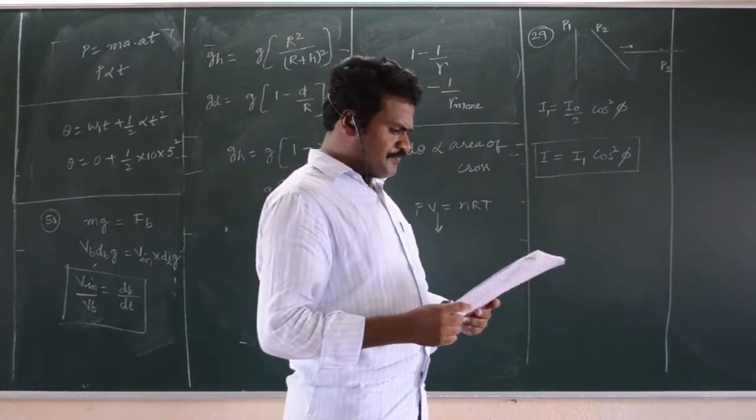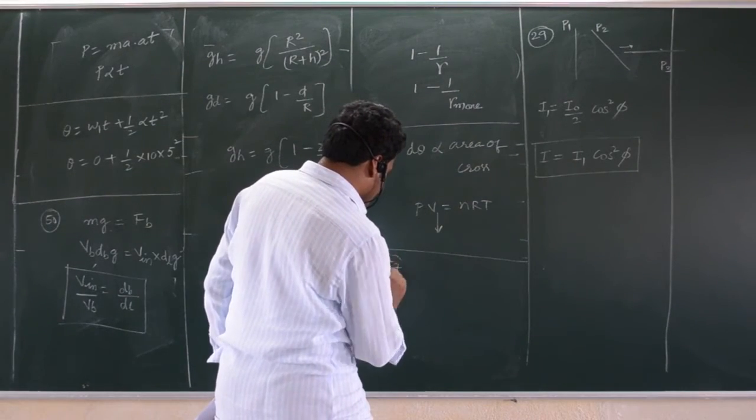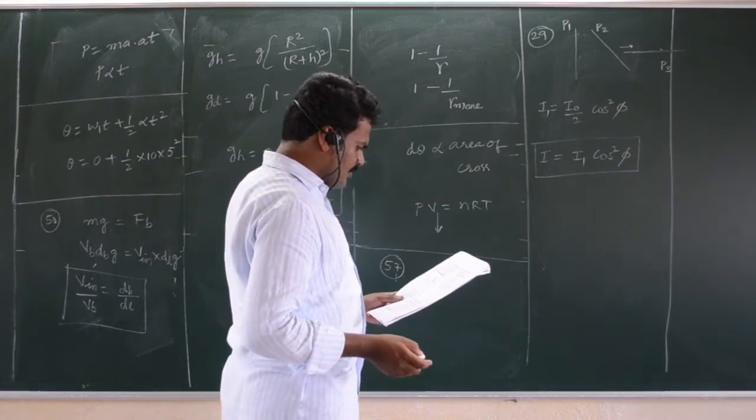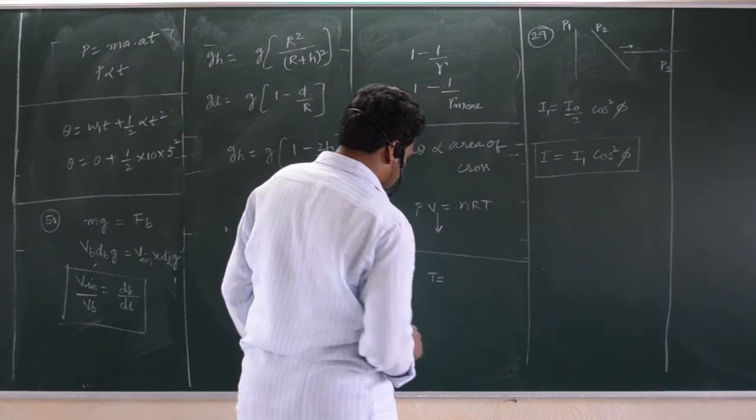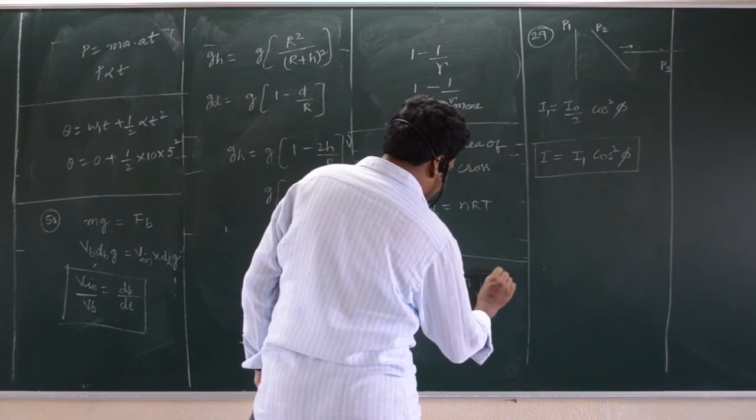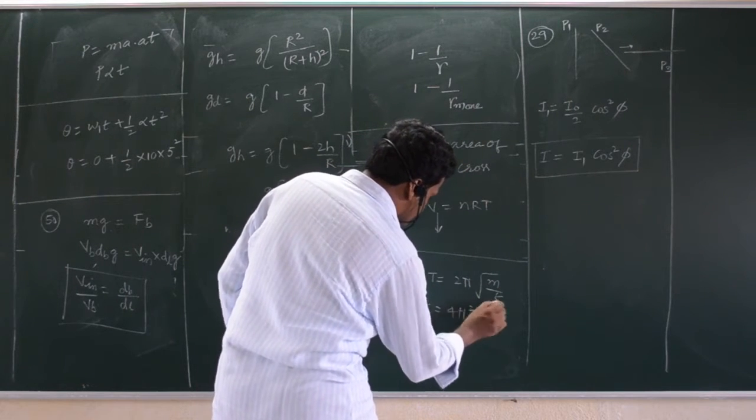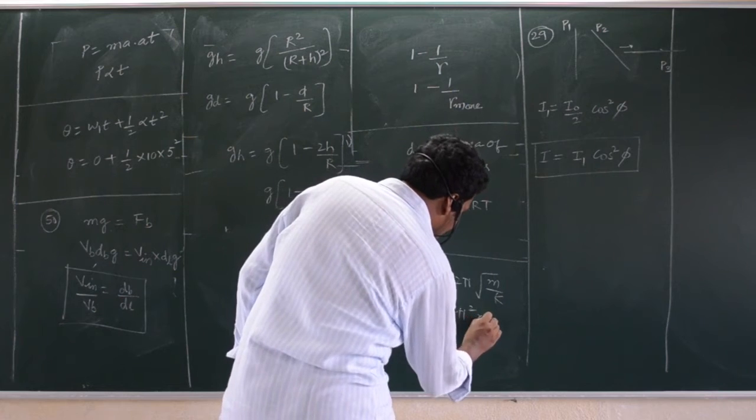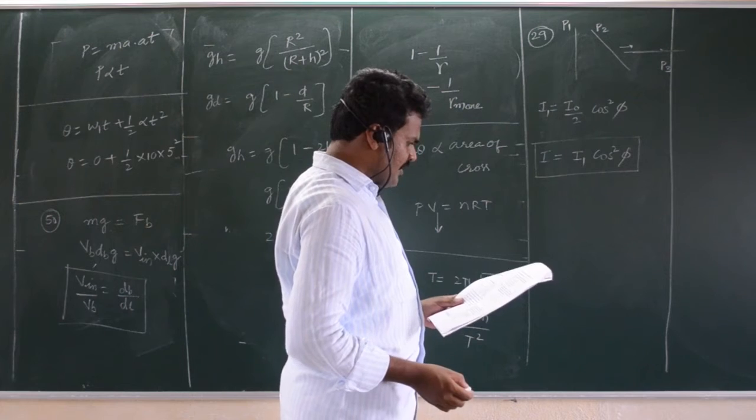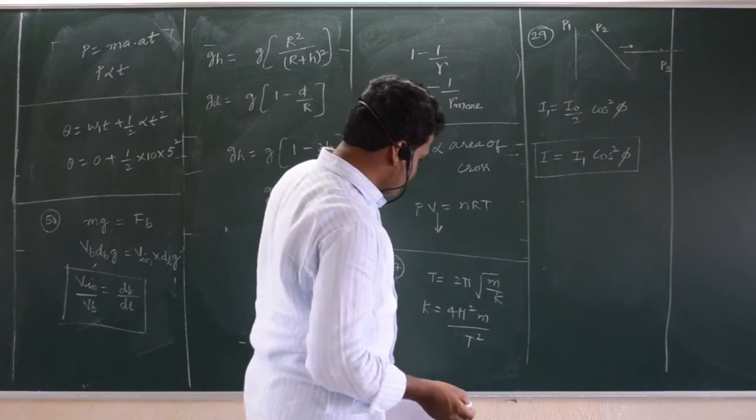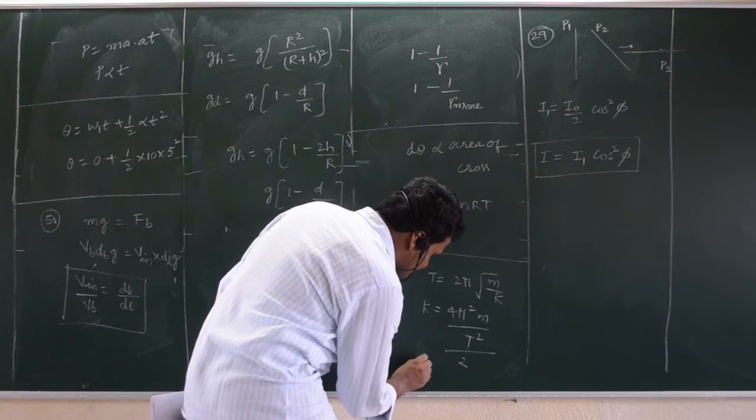Next, question number 57. Here, two springs are present. You can calculate the total spring constant. That is, time period is equal to 2 pi under root of M by K. From this, you can write K is equal to 4 pi square M by T square. Calculate K and divide by 2, you will get the answer. M value is given, 12 divided by 2, you will get exactly K. Afterwards, you have to divide by 2 because two springs are there, you will get 105.